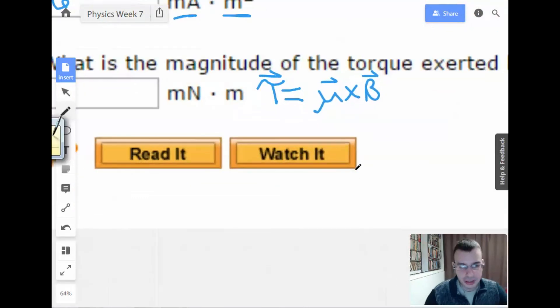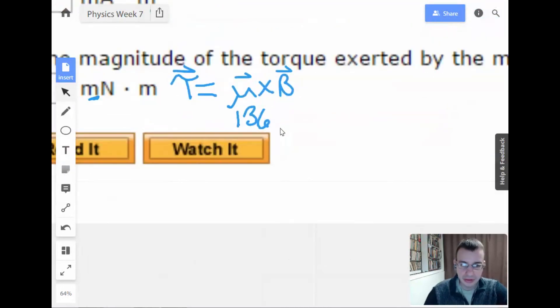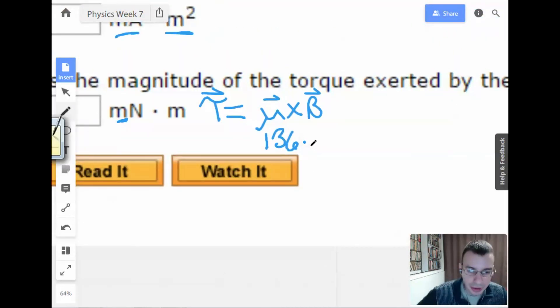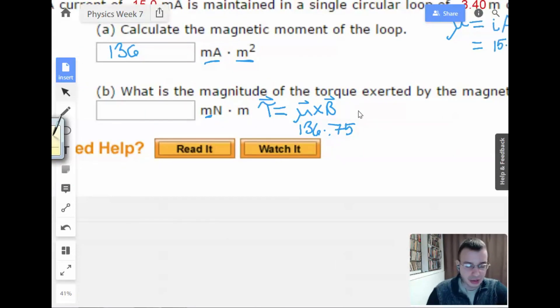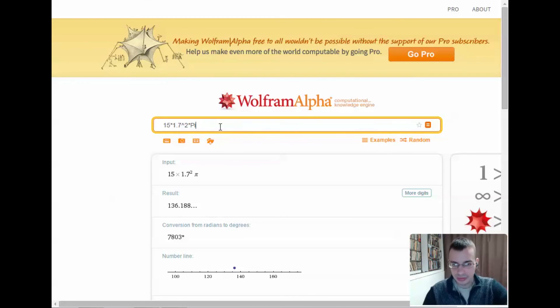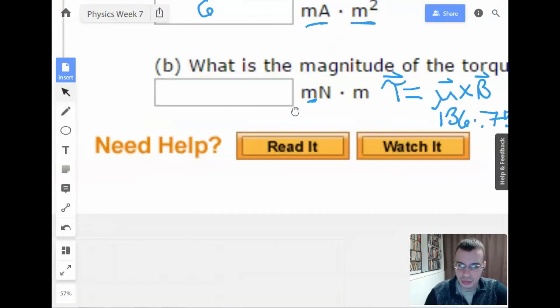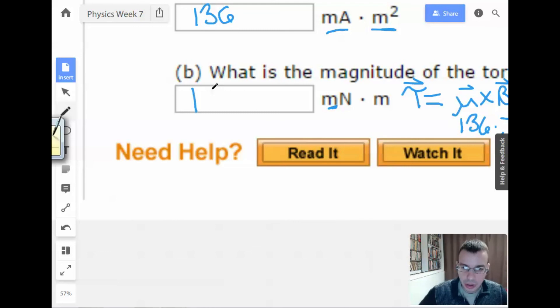Alright. So we're going to take our 136. I'm going to leave it at 136. Times magnetic field, 0.75. And we know that they are perpendicular. So we don't have to worry about the sine theta thing. It's going to be sine of pi over 2 or 90 degrees, and that is just going to be 1. So 136 times 0.75. I need to get a more accurate answer. 102.